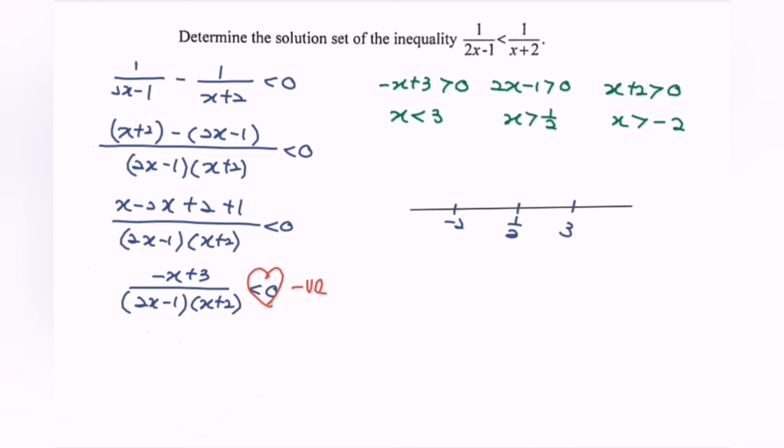First, refers to the left-hand side where we have empty circle. x is greater than negative 2. Followed by we have 1 over 2. x is greater than 1 over 2. Finally, we have 3 empty circle. x is less than 3.